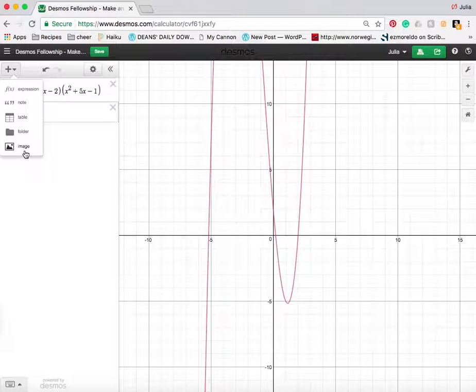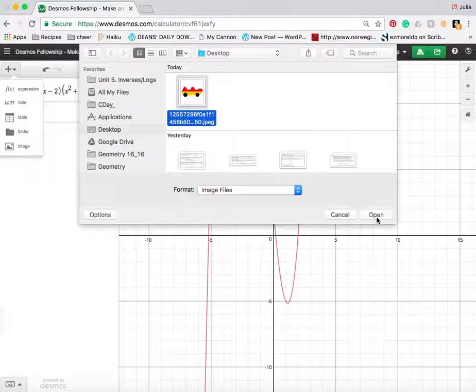Now I want to enter in an image. I'm going to click the add item button, then image. I already had my image picked out. I'm going to use this race car and open it.